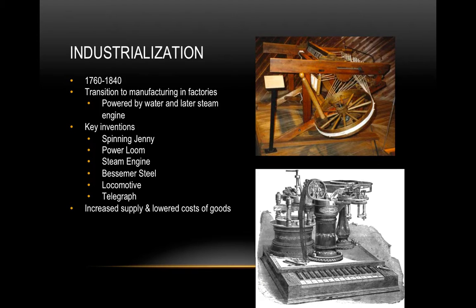Some key inventions from this revolution include the spinning jenny, pictured in the top right, which is really the first machine that allows for factory production. It allows you to take cotton and spin it into thread. Then you have the power loom, which takes that thread and weaves it into a textile, so you can make clothing and whatever else you want.